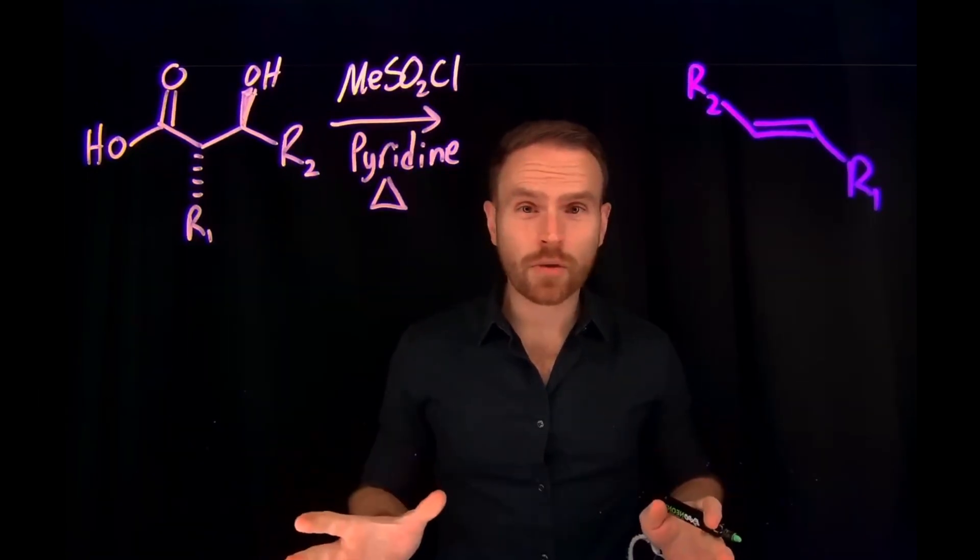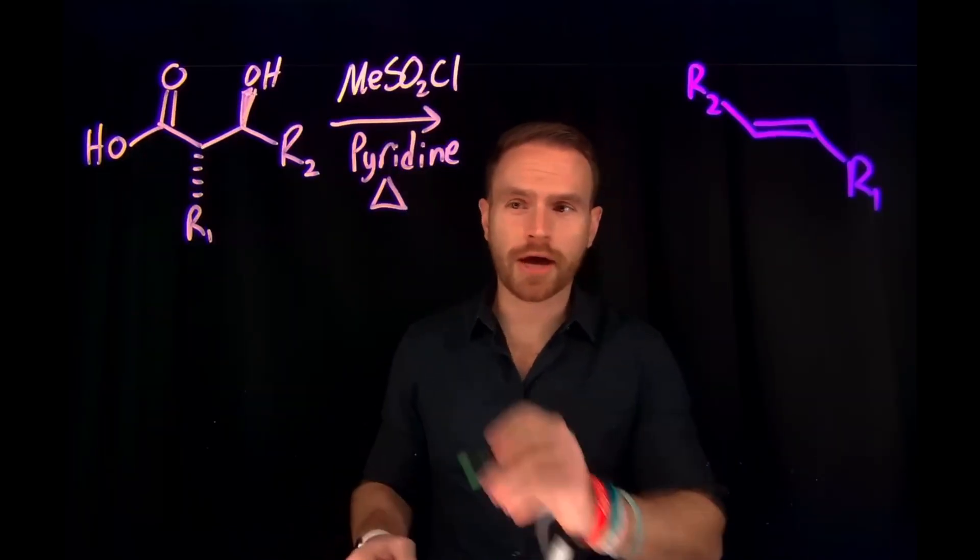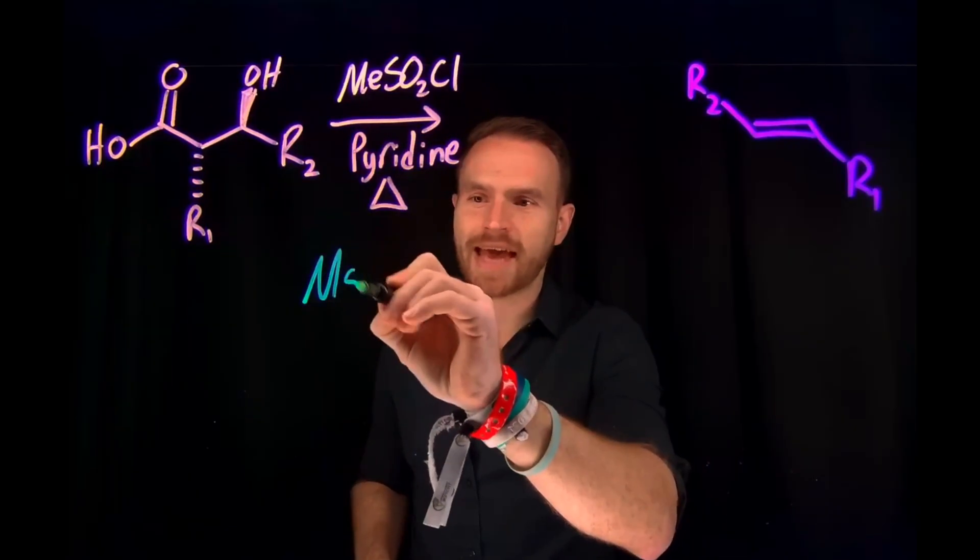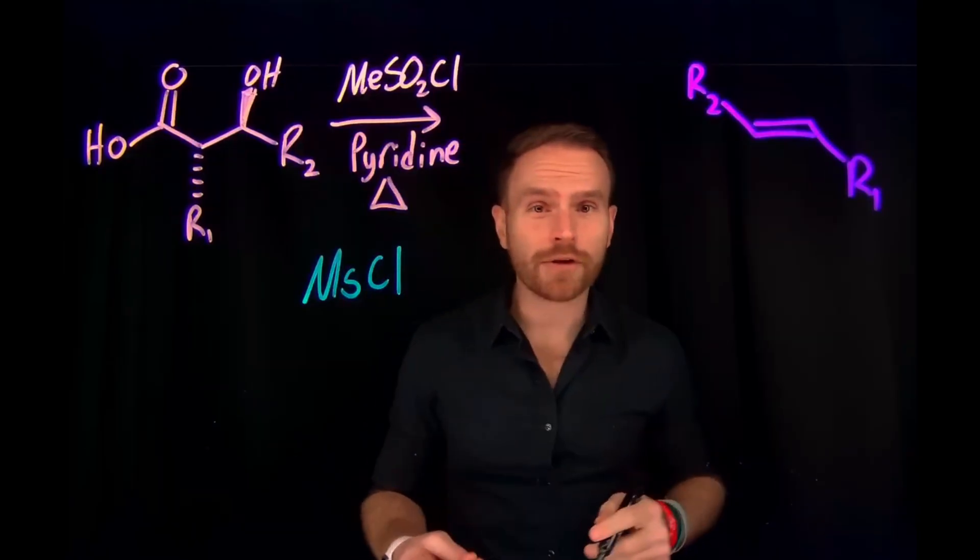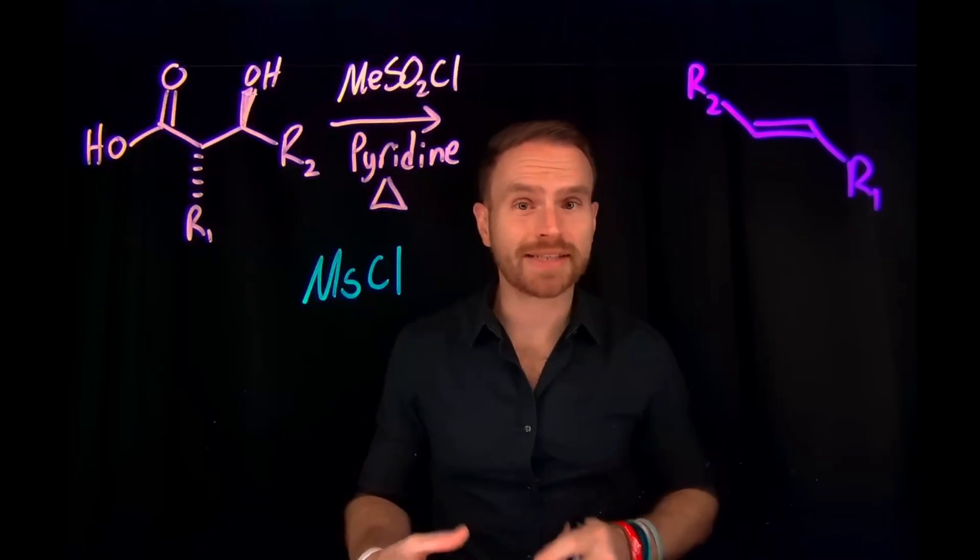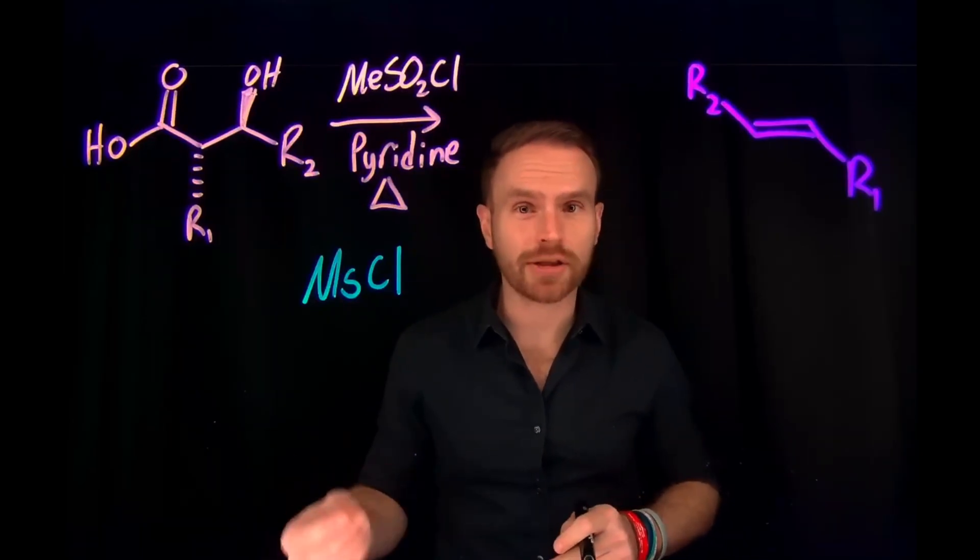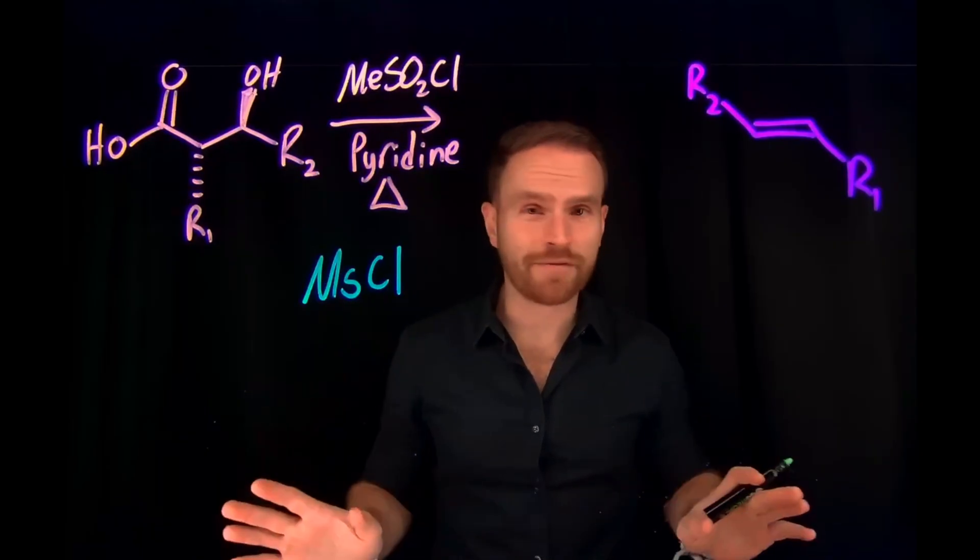Some important things I want to point out before we begin is that this reagent, known as methane sulfonyl chloride, can actually be written as MsCl, and it's often used as a really great leaving group. It can actually be used to replace alcohols with mesolates, which are known as a good leaving group because alcohols are not very good leaving groups.